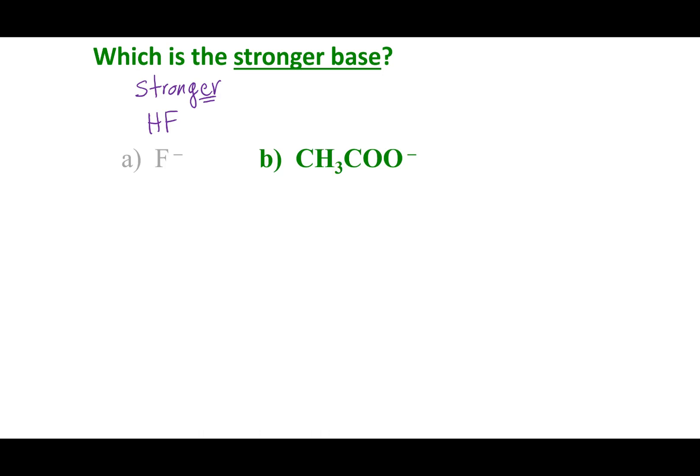What we established in the last slide is that HF was the stronger acid. And so, what's going to happen here is that if it is a stronger acid, it is going to make a weaker base. So, that means that CH3COO- is a stronger base.